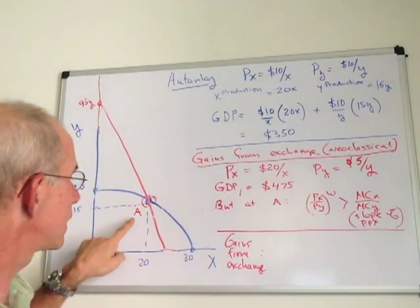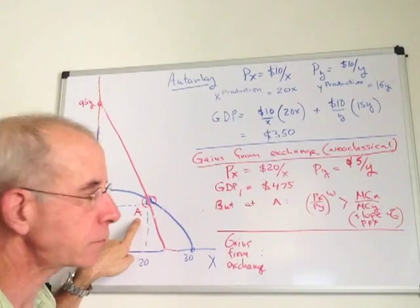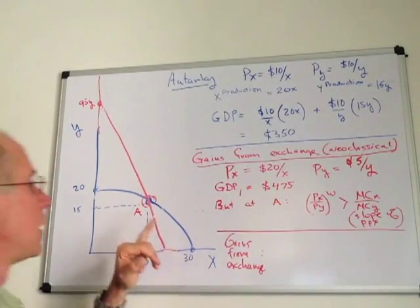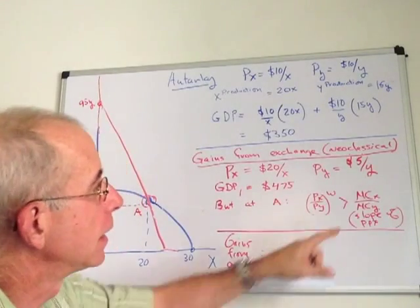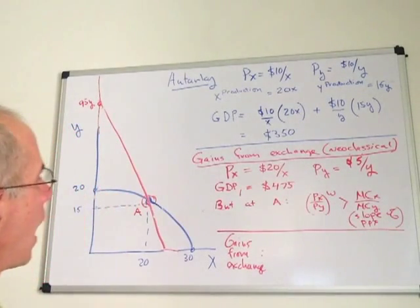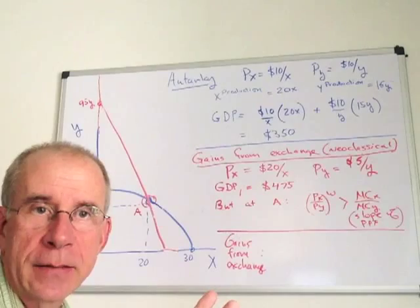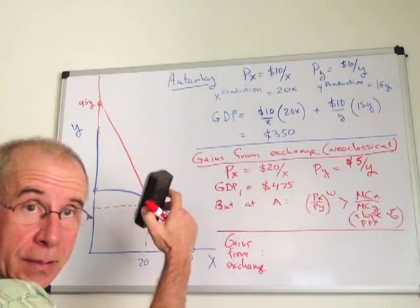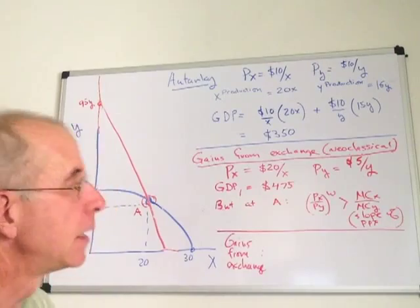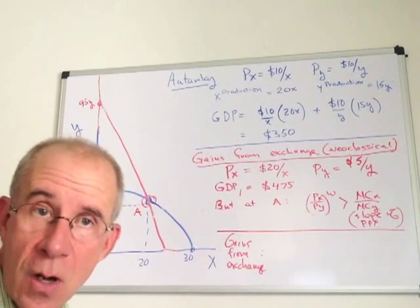So one of the things about point A though is that that's not a situation that is likely to remain. There are going to be incentives for firms to change their production levels. If you recall that the slope of the PPF is the ratio of the marginal cost for that given level of production. And what we have here at point A is that the world relative price of X and the absolute value of that, of the slope, is greater than the absolute value of the slope of the PPF.